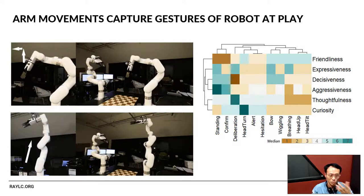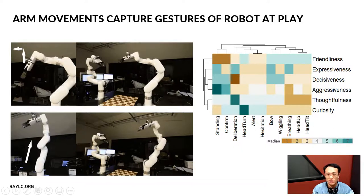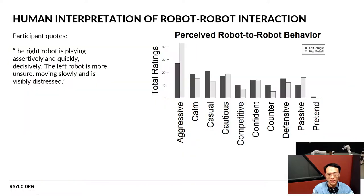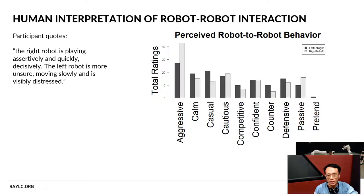So why do we do this? We wanted to verify that people are able to interpret machine gestures as having properties of friendliness, expressivity, decisiveness, and so on. But that's only part of the story — the next part, which is less touched upon by HCI researchers, is the question of how humans interpret robot-robot interactions.